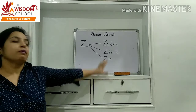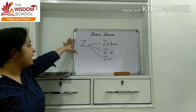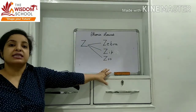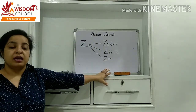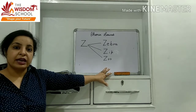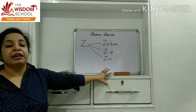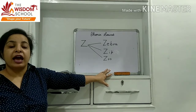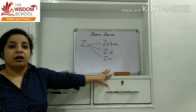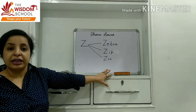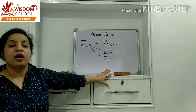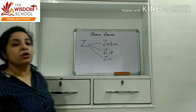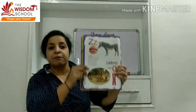This is the letter Z. The sound of letter Z is like the sound bees make — bees make a buzzing sound — that is how Z sounds. My name is Z, but my sound is 'z'. Z for zebra, Z for zip, Z for zoo.